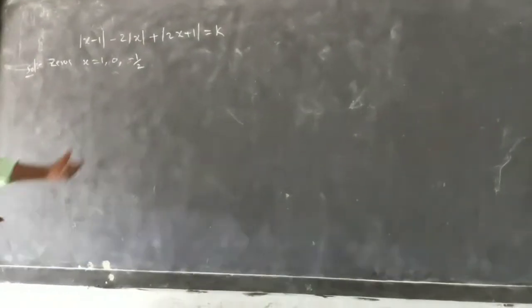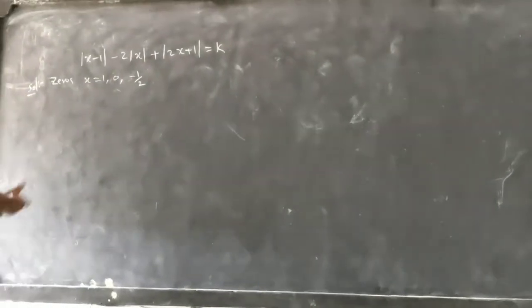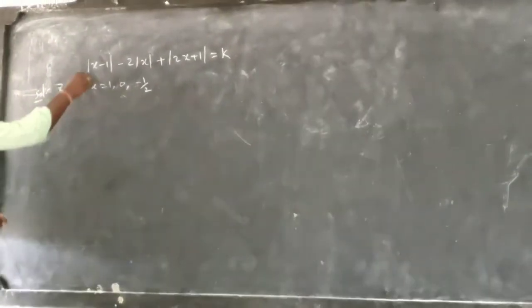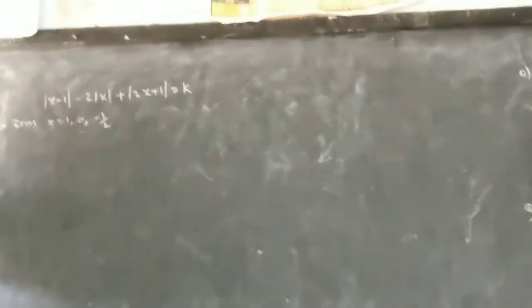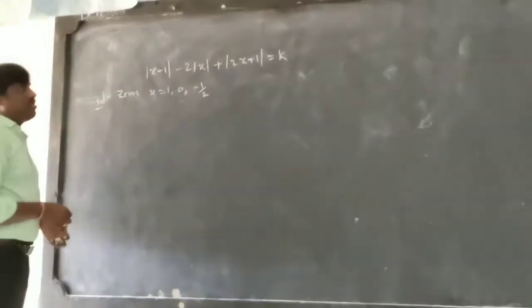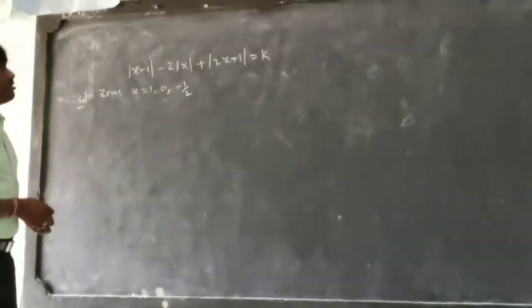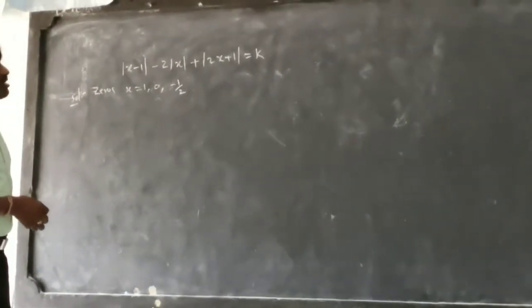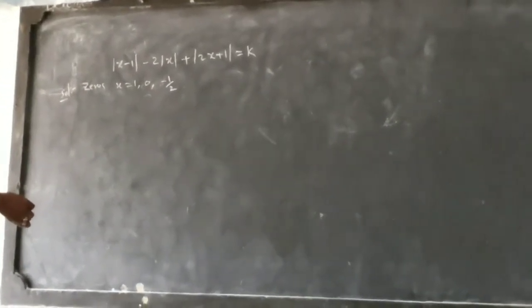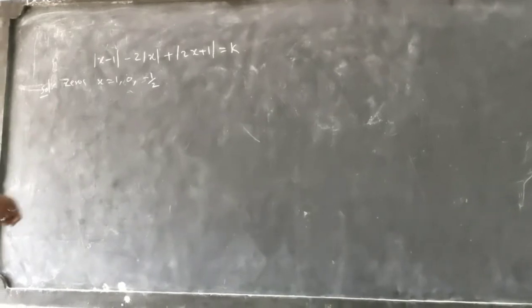Let us see this question: mod(x-1) minus 2·mod(x) plus 2·mod(x+1) is equal to k. Find the graph of this function.